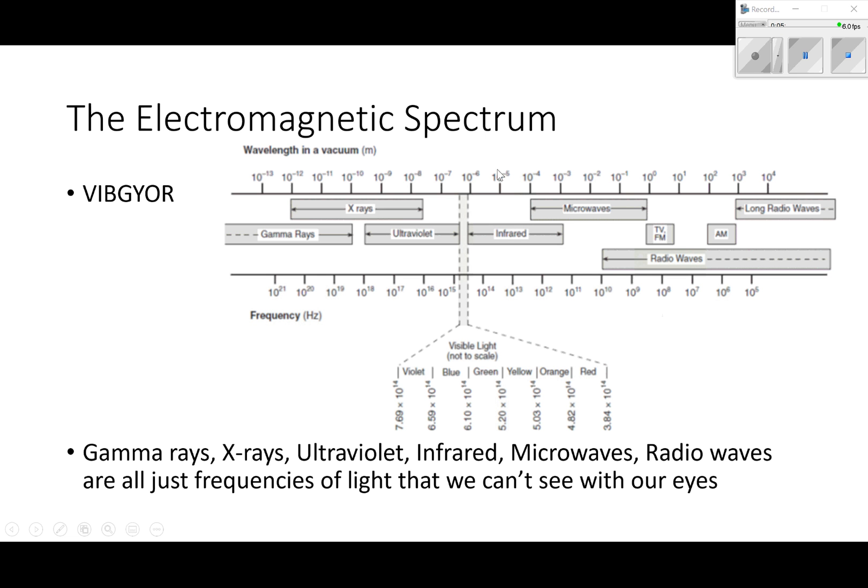It's worth noting that ultraviolet - ultraviolet means more than violet because the frequency of ultraviolet is greater than the frequency of violet. Same thing with infrared. Infrared is next to red. Infra means less than. Infrared means less than red.